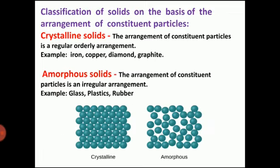On the basis of arrangement of constituent particles, solids are classified into mainly two types: crystalline solid and amorphous solid. Consider chalk and a chalk holder — both are made up of the same particle, calcium carbonate. But we can break chalk easily but not the chalk holder. This is because chalk is an amorphous solid and the chalk holder (marble) is a crystalline solid.